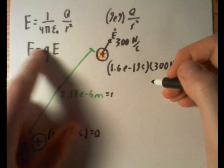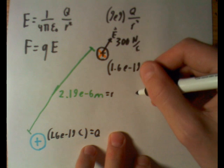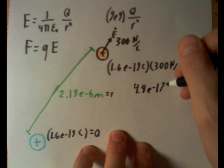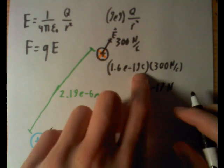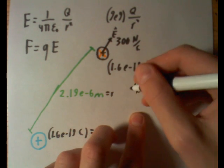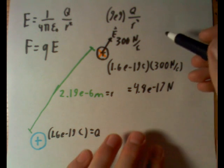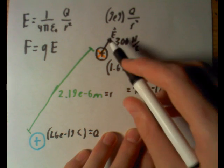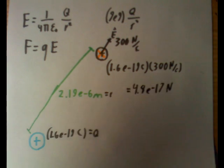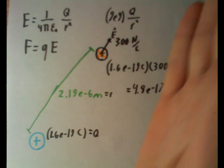And when you equal that out, it'll end up being 4.8e to the negative 17th newtons. And if you notice, Coulombs times newtons per Coulomb cancel out to be newtons. So that's how you find the force. And if you notice, it's positive, so it'll be going the same direction as the E. And that makes sense because like charges repel. So that's why it's feeling the force in that direction.